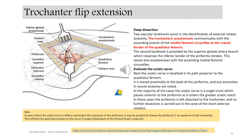According to my suggestion, this slide is the most important slide. If you want to be successful, learn this slide and deeply investigate all its details. Two vascular landmarks assist in the identification of external rotator anatomy. The trochanteric anastomosis communicates with the ascending branch of the medial circumflex artery, located at the cranial border of the quadratus femoris. The second landmark is provided by the superior gluteal artery branch, which traverses the inferior border of the piriformis tendon. This vessel also anastomoses with the ascending medial circumflex artery.